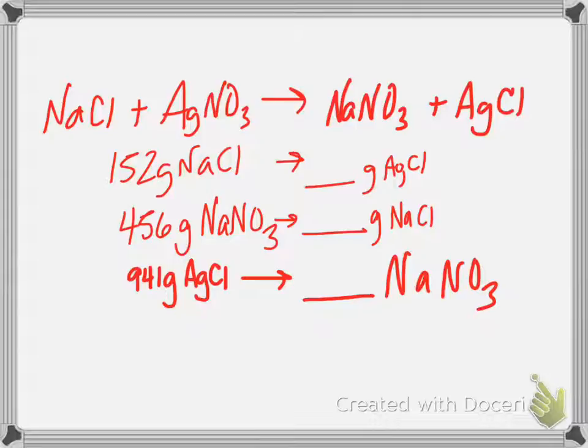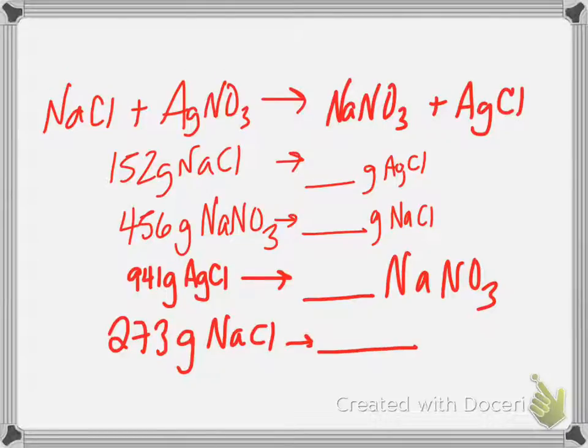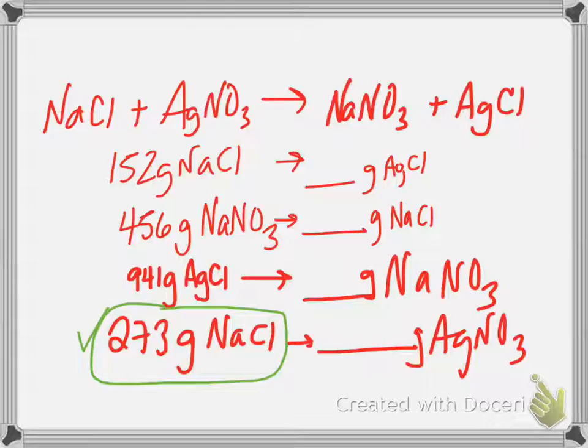If I tell you I need to make 456 grams of sodium nitrate, you can tell me how many grams of sodium chloride I need. You can compare any product and reactant, reactant and product. If I tell you that you made 941 grams of silver chloride, can you tell me how many grams of sodium nitrate were also made? Yeah, you know how to do all of these. You can compare any two things in this equation. Here comes the kicker, it's not really a catch actually.